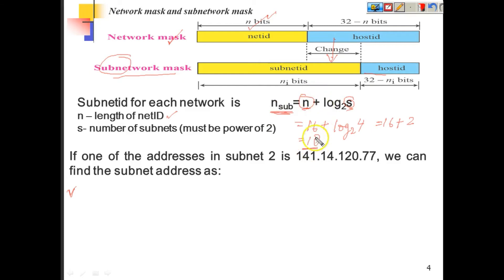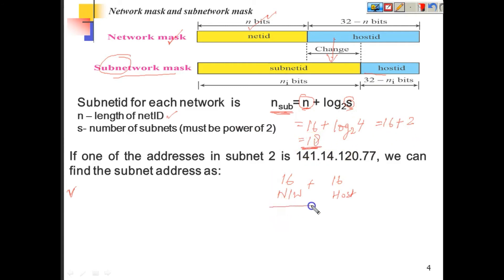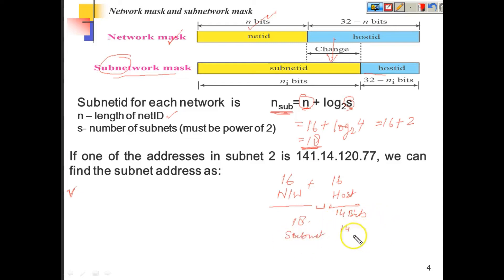I have taken two bits from the host to make the subnet. In the previous scenario, we have 16 bits for the network and 16 bits for the host. In order to make four subnets, we need 18 bits — 16 are already there and two bits are taken from the host. So the host will have only 14 bits left. So 18 bits will be the subnet bits and 14 bits for the host, meaning each subnet will have 2 power 14 IPs in its network.